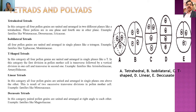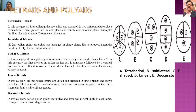In tetrahedral tetrads, all four pollen grains are united in two different planes like a tetrahedron. As seen in diagram A, three cells are at the front side and one cell is at the back side — the fourth cell is in another plane. The families Winteraceae, Droseraceae, and Ericaceae are examples of tetrahedral tetrads.